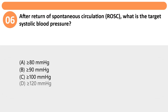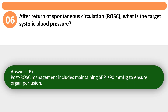After return of spontaneous circulation (ROSC), what is the target systolic blood pressure? A. Greater than or equal to 80 mmHg. B. Greater than or equal to 90 mmHg. C. Greater than or equal to 100 mmHg. D. Greater than or equal to 120 mmHg. Answer: B. Post-ROSC management includes maintaining SBP greater than or equal to 90 mmHg to ensure organ perfusion.